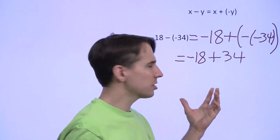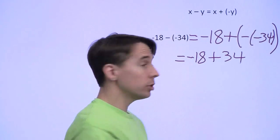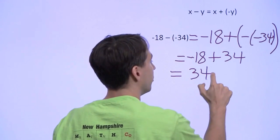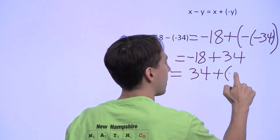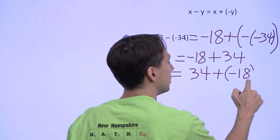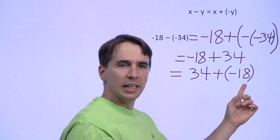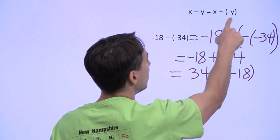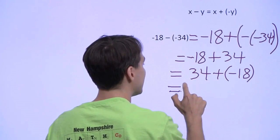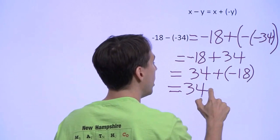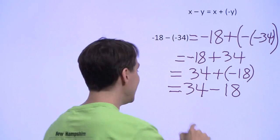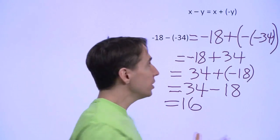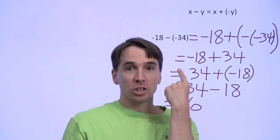We have negative 18 plus 34. How do we handle this? We can use the commutative property of addition to reverse the order and write this as 34 plus negative 18. The addition of a negation is subtraction, so we use our rule again. 34 plus negative 18 is the same thing as 34 minus 18, which is 16. We can handle these complicated subtraction problems with just one rule.